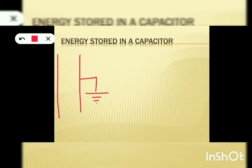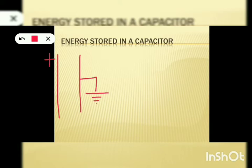We usually give positive charges to the first plate of the parallel plate capacitor. We bring the first positive charge to the first plate. We can easily bring this positive charge because no other charges are present here to offer any repulsion or attraction. So not much force is required to bring this first positive charge to the plate.